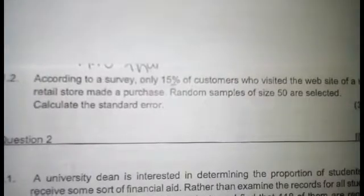So 0.15 times (1 minus 0.15), that is our population proportion, over n which is the sample size. Random samples of size 50 are selected, so the sample size is 50.